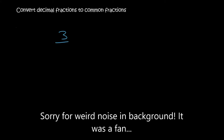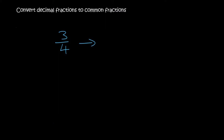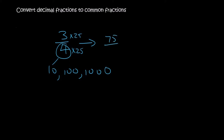Hi guys. We've been looking at how to convert common fractions like 3 over 4 to decimals. We would typically try to change the denominator to 10, 100, or 1000. For example, you would multiply top and bottom by 25, giving you 75 over 100. There are two zeros, so you move it two places back, ending up with 0.75.